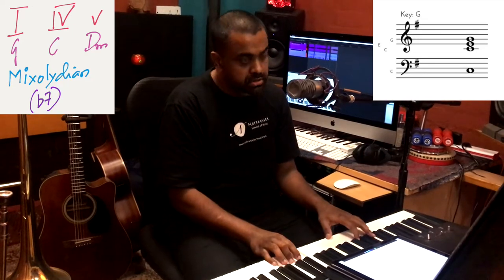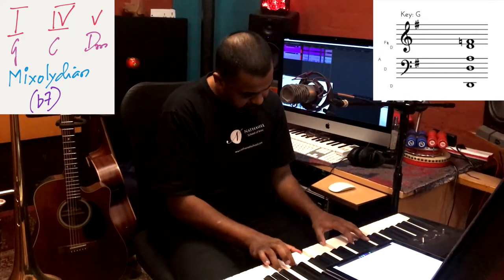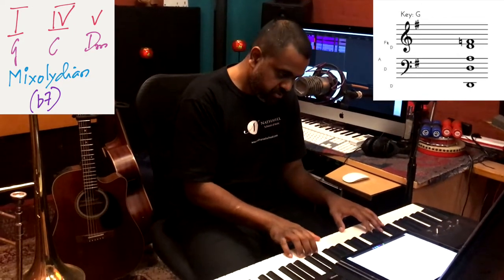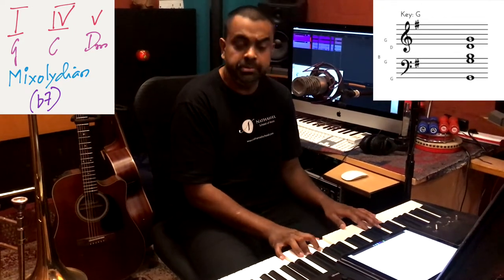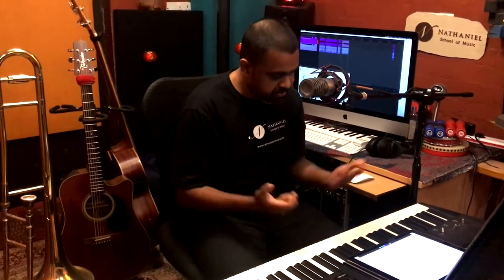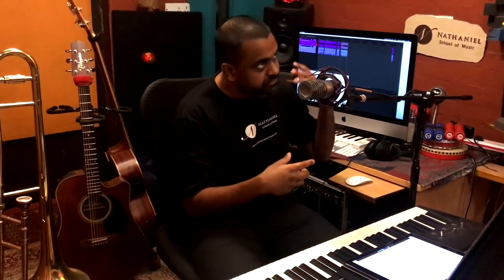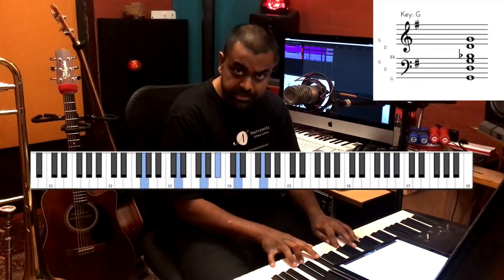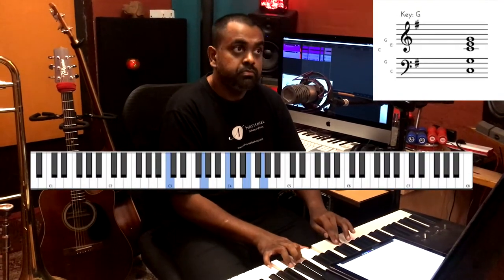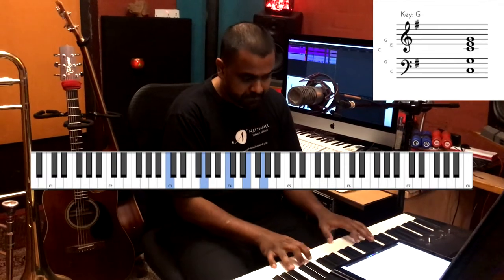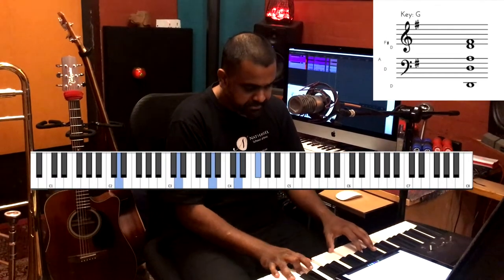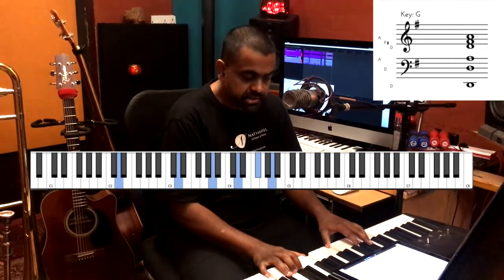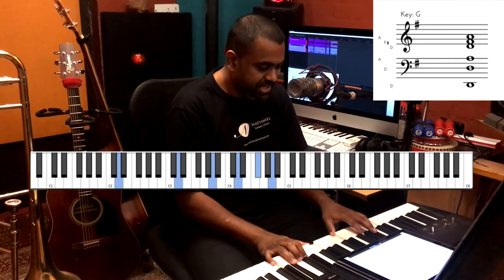What else can we do? One minor, four major, five major — that's going to sound fun. G minor, four major, and five major. This will form something like a melodic minor scale.